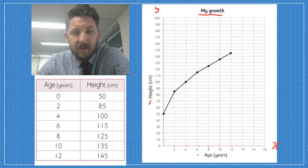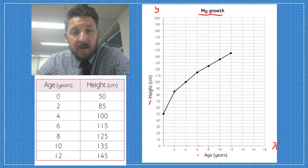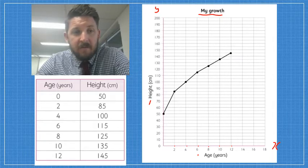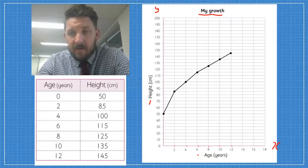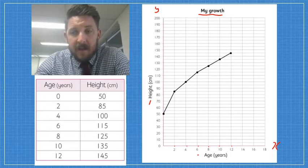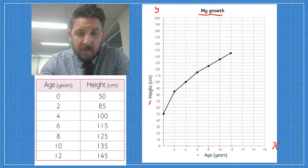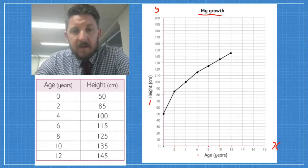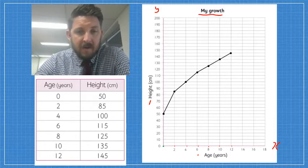You can see that at 2 years of age, it was 85 centimetres, 4 years of age 100 centimetres, and all the way up to 12 years of age which was 145 centimetres. Now you can see that that's been plotted on the graph using the plots along the way, and we've joined them together. The first thing that I want you to be very aware of that a lot of people make mistakes on is they plot the first plot always down here in the bottom corner. This is called the origin, and we definitely don't want to be plotting from our origin.